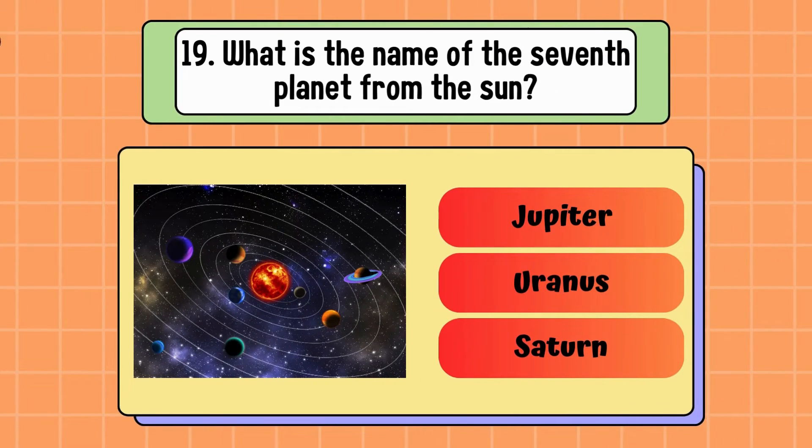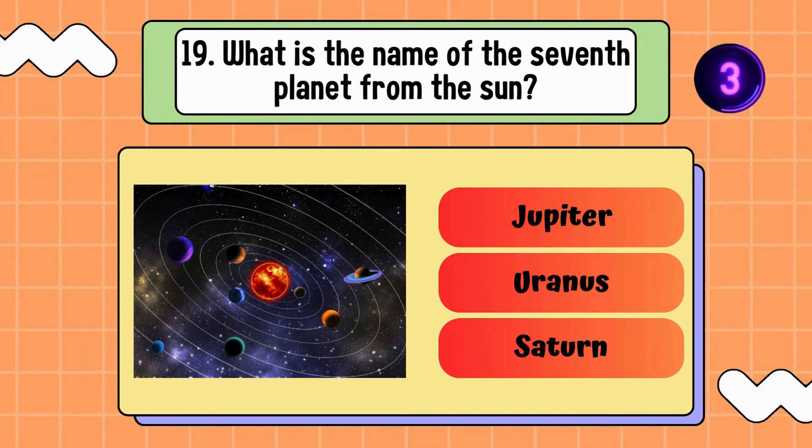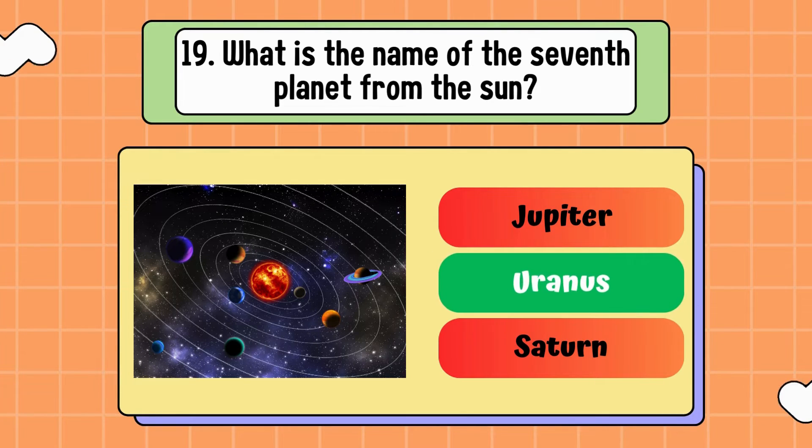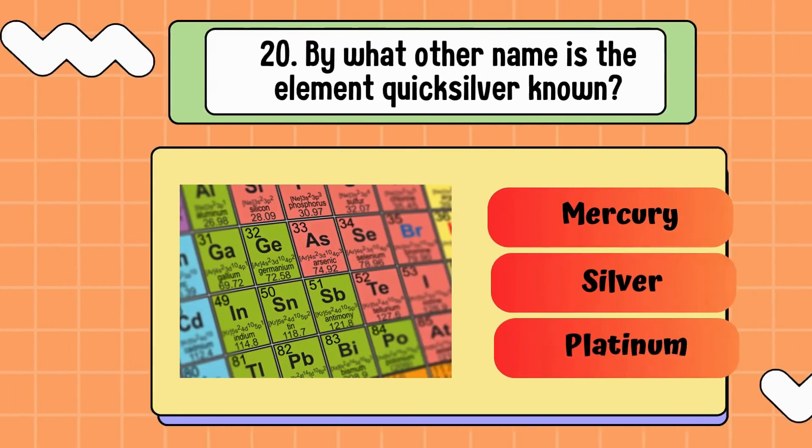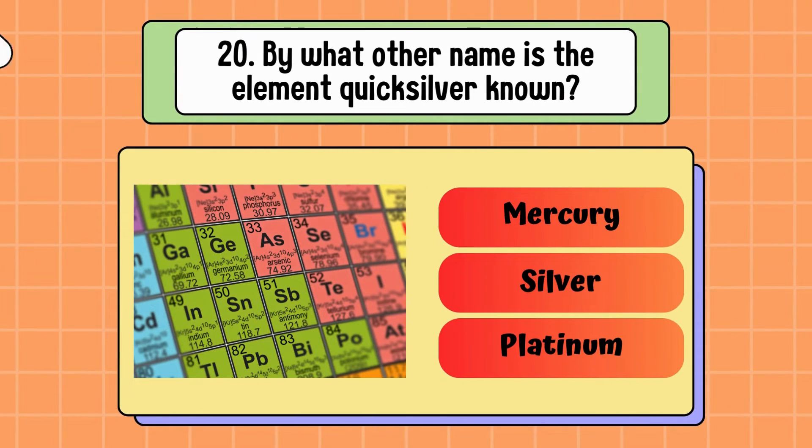What is the name of the seventh planet from the sun? Jupiter, Uranus, or Saturn? Correct answer is Uranus. By what other name is the element Quicksilver known? Mercury, silver, or platinum? Correct answer is mercury.